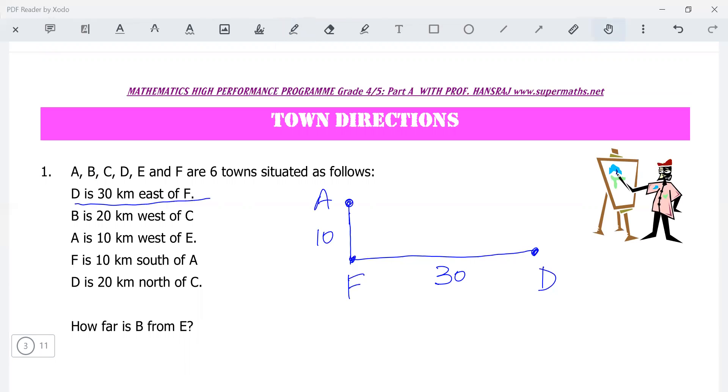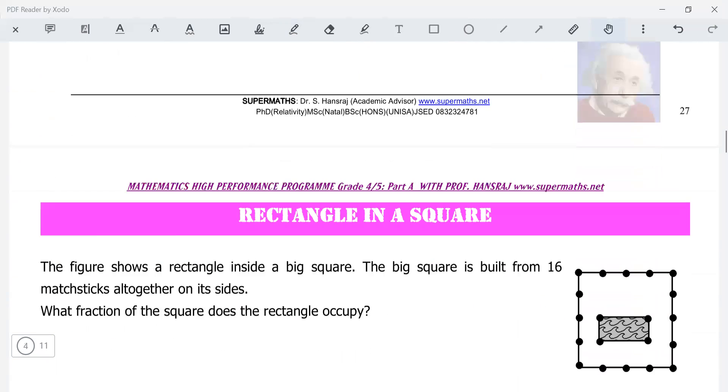D is 20 kilometers north of C. So this is C. Now, can you fill in the rest of it and then work out how far B is from E?